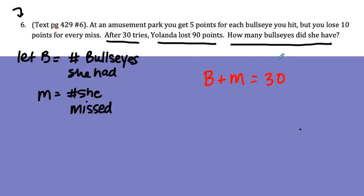Now the other one relates to her total points. For every bullseye she made she got 5 points but she lost for the ones she missed. So that would be 5 for the B's but she lost 10, so it'd be minus 10 for the misses. And she lost 90 points, so that would be negative 90 points. So there I now have my system.